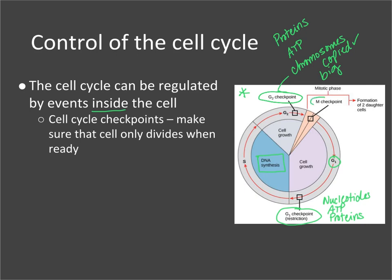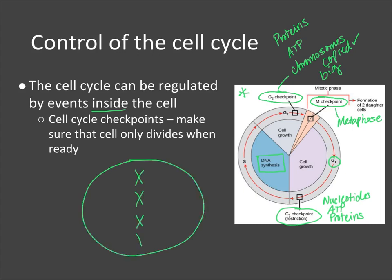Yet another checkpoint is the M checkpoint, also known as the mitosis or metaphase checkpoint. During metaphase, chromosomes are lined up in the middle of the cell and are supposed to be attached to microtubules of the mitotic spindle. If one doesn't attach properly, the cell fails the M checkpoint and stops going through mitosis.